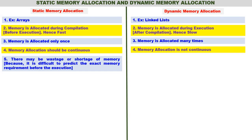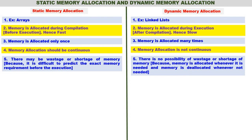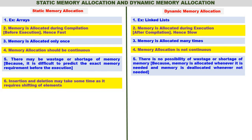In static memory allocation there may be wastage or shortage of memory, because it is difficult to predict the exact memory requirement before execution. In dynamic memory allocation there is no possibility of wastage or shortage, because memory is allocated whenever it is needed and deallocated whenever it is not needed.